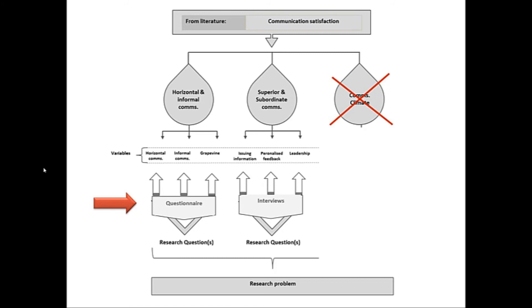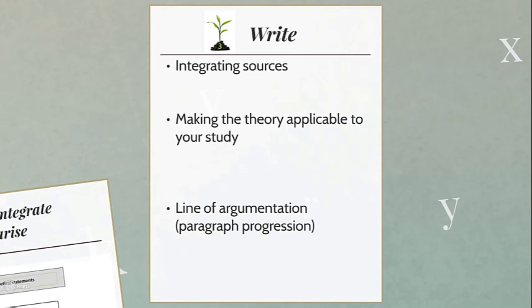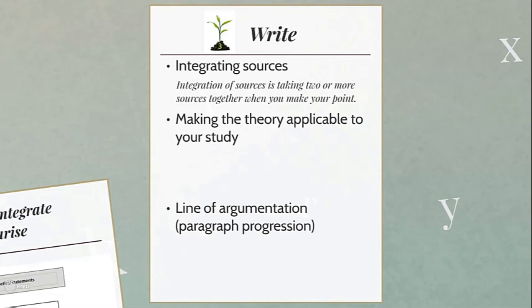Now let's look at the last part of the literature review process — writing up — focusing on integrating and summarizing. There are three main aspects I want to zoom in on: integrating sources, making the theory applicable to your study, and line of argumentation. Integration of sources is taking two or more sources together when you make your point or discussion in your literature review. Let's have a look at some examples.